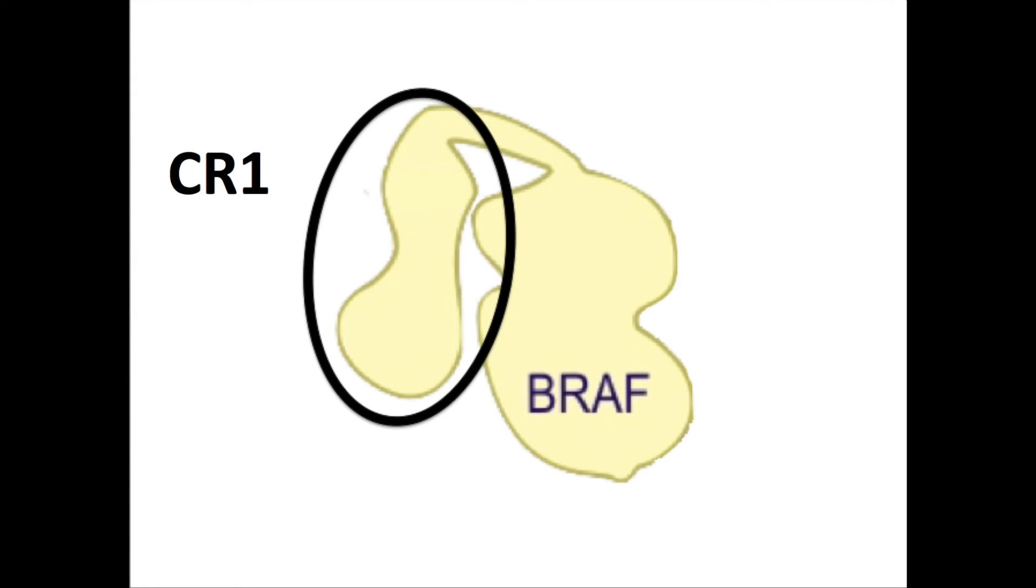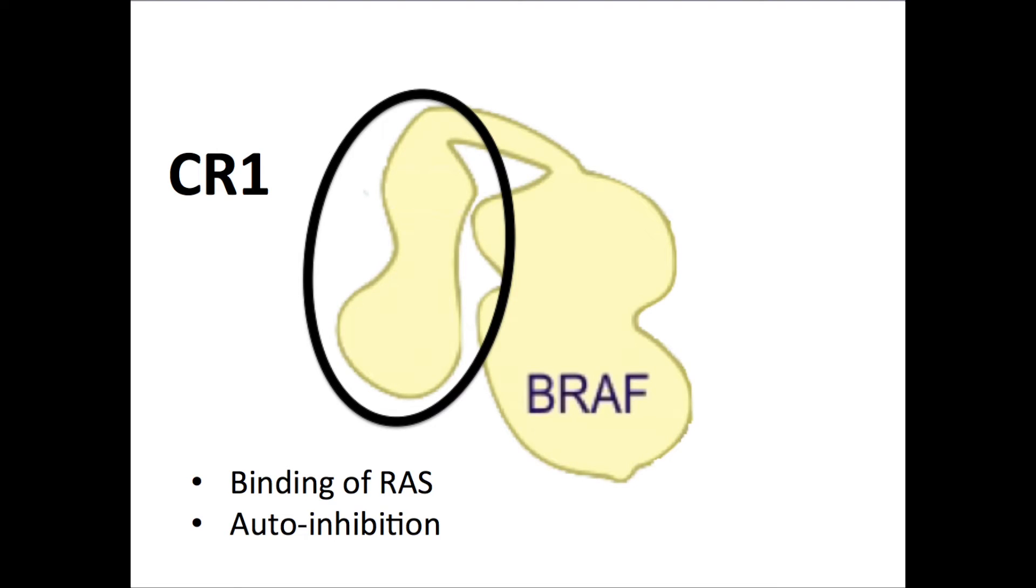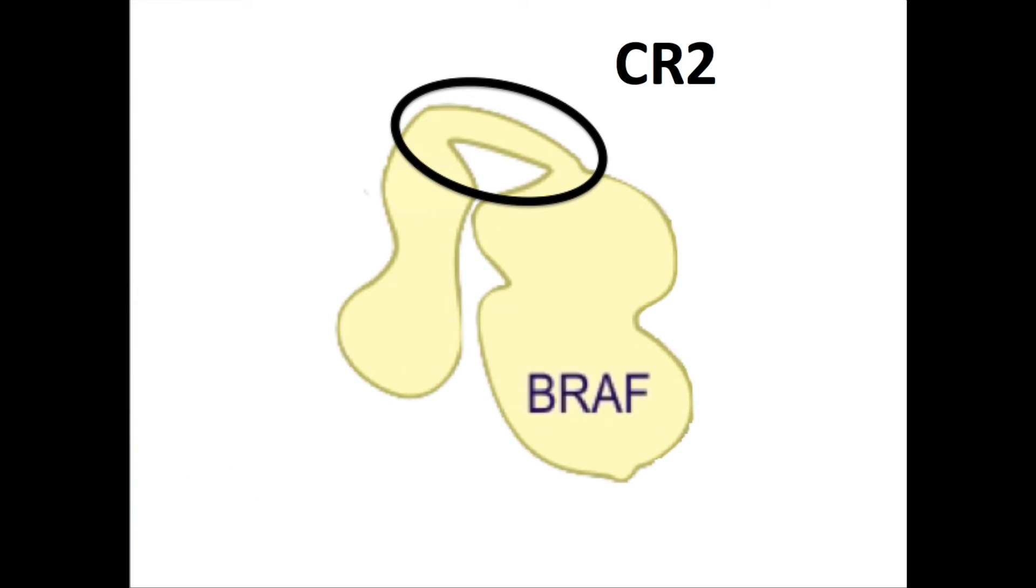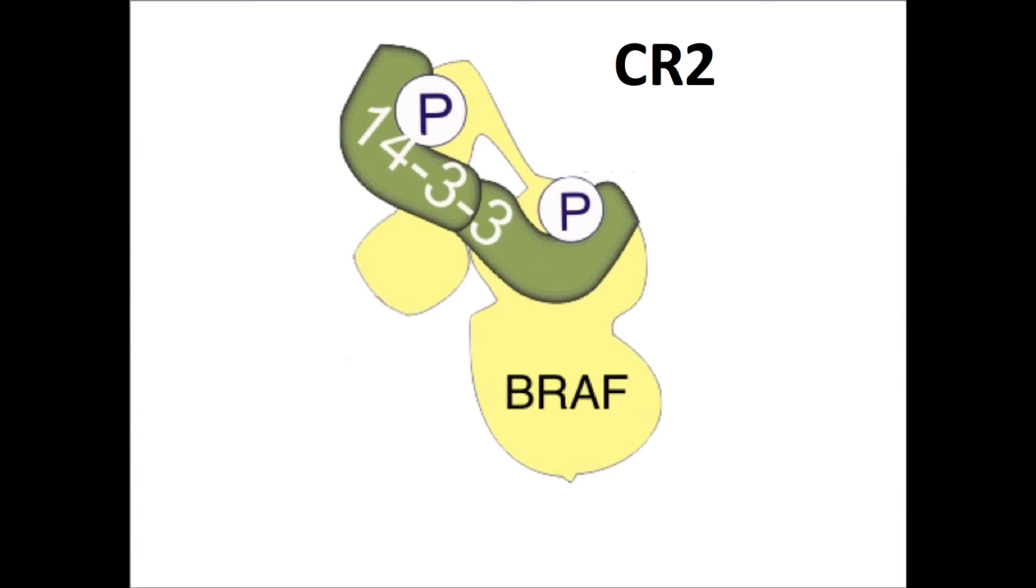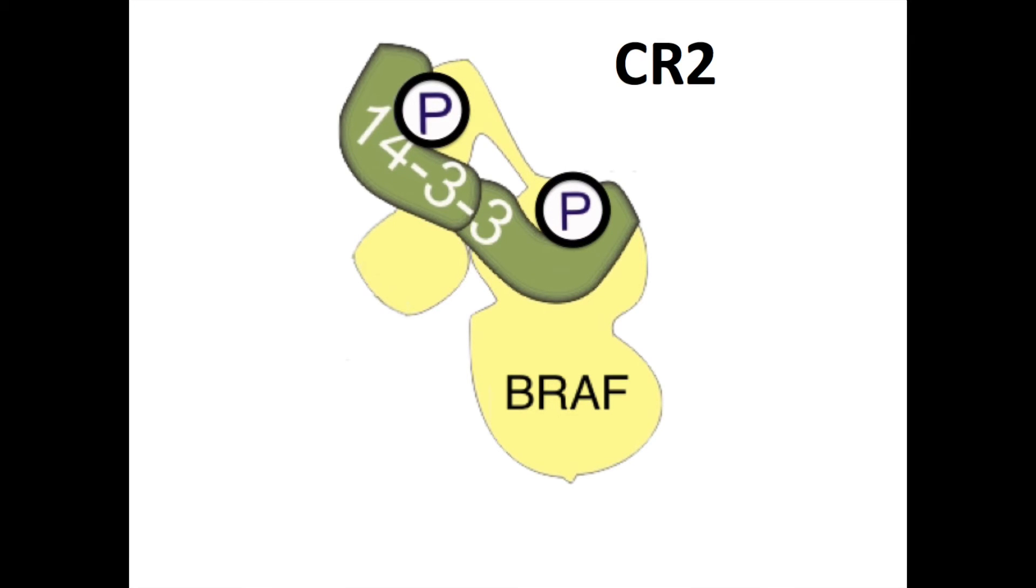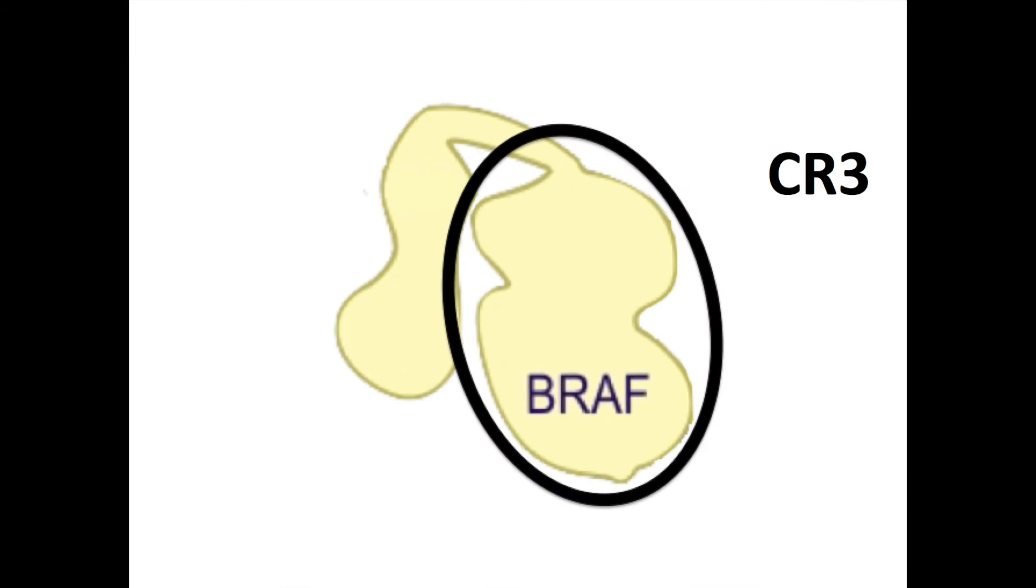CR1 has two main functions. The first is the binding of RAS, which is needed for activation. The second function is auto-inhibition of CR3. This way, ATP cannot bind and MEK cannot get phosphorylated. CR2 is a bridge between CR1 and CR3 and can bind to a protein called 14-3-3. This protein acts as a lock to keep BRAF in its inactive conformational state. 14-3-3 needs to get phosphorylated by a kinase in order to bind to BRAF. CR3 contains the MEK kinase domain and can bind to ATP.